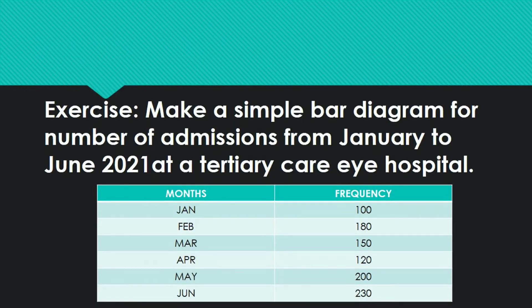Exercise: Make a simple bar diagram for the number of admissions from January to June 2021 at a tertiary eye care hospital. I have listed the months and frequencies. Plot the frequency for each month as a bar. If you use Excel or Google Sheets, just enter the data and the graph is created automatically.